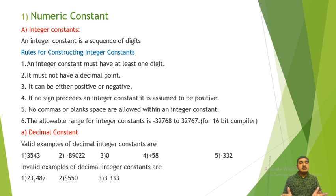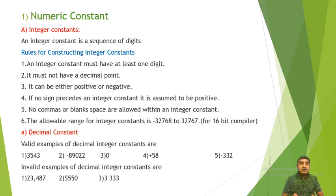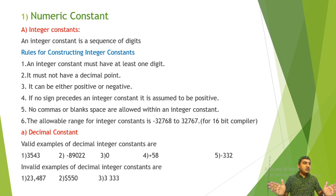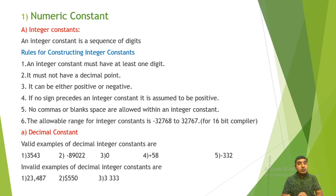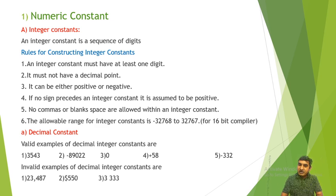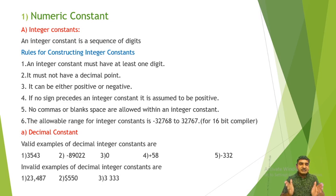Third rule: it can be either positive or negative. Fourth rule: if no sign precedes an integer constant, it is assumed to be positive. Fifth rule: no comma or blank space is allowed within an integer constant. Sixth rule: the allowed range for integer constant is minus 32,768 to 32,767 for a 16-bit compiler; it is different for 8-bit, 32-bit, and 64-bit compilers.